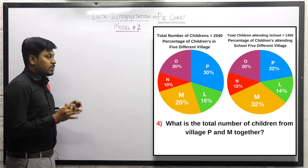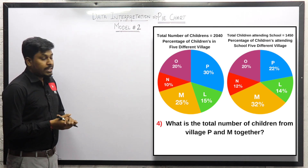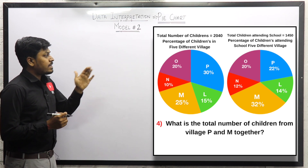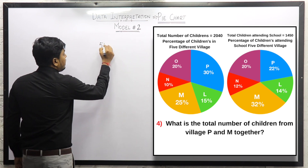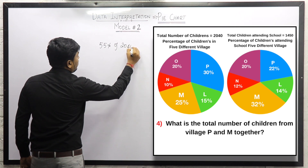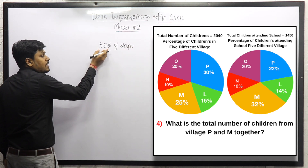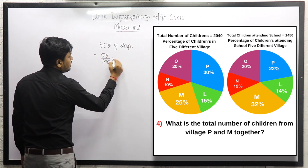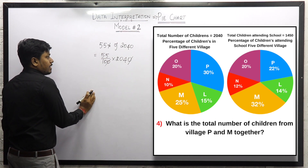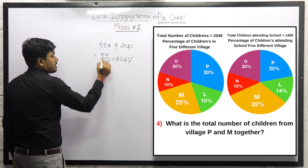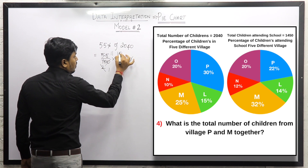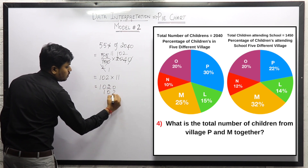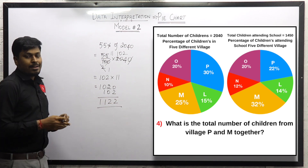Question number 4: What is the total number of children from village P and M together? Village P is 30% and village M is 25%, so together 55%. So 55% of 2040: 55/100 × 2040. Cancelling zeros, then by 5 to get 11, then by 2 to get 102, and multiplying 102 × 11 gives 1122. So 1122 is the answer for question number 4.